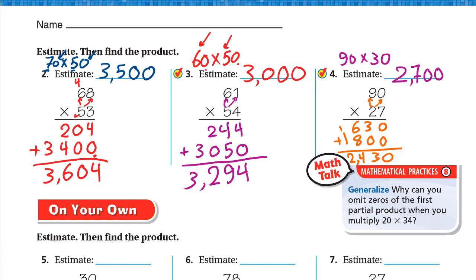That's how to multiply using regrouping. Step 1: multiply by the first digit. Step 2: erase the carry, write 0, and multiply the second digit. Step 3: add the two products. Hope you enjoyed this lesson — have a nice day, goodbye!